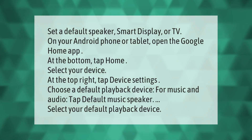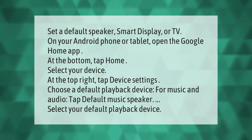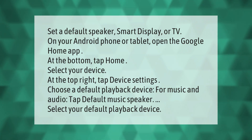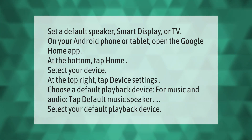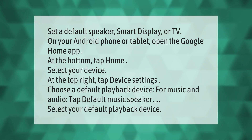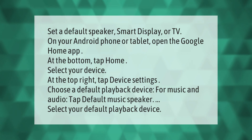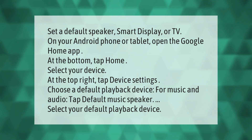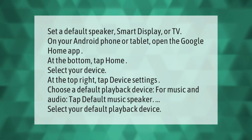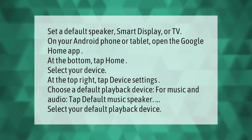To set a default speaker, smart display, or TV on your Android phone or tablet: open the Google Home app. At the bottom, tap Home and select your device. At the top right, tap Device Settings and choose a default playback device. For music and audio, tap Default Music Speaker and select your default playback device.